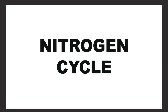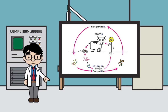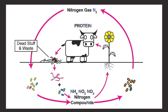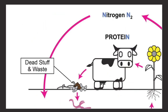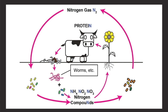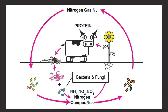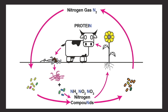And here's the nitrogen cycle. As you can see, we have nitrogen gas, proteins, and nitrogen compounds in the soil. Here is our consumer, represented by the moomoo, which is an animal, and our producer, a plant. Our dead stuff and waste are represented by some dead flowers and the moomoo's poop. Moving into the soil, you can see that the worms and the bacteria and fungi are working together to turn that waste and dead stuff into nitrogen compounds.